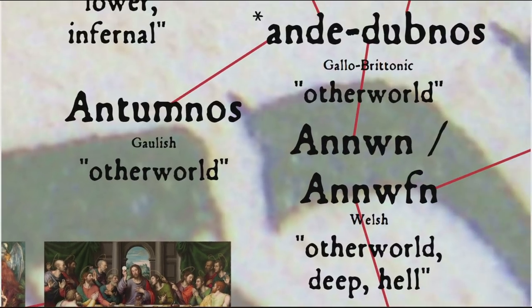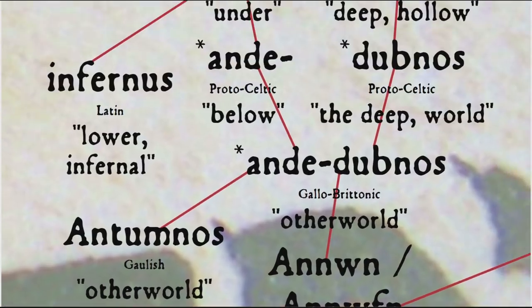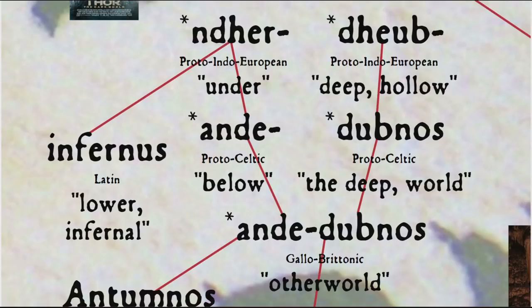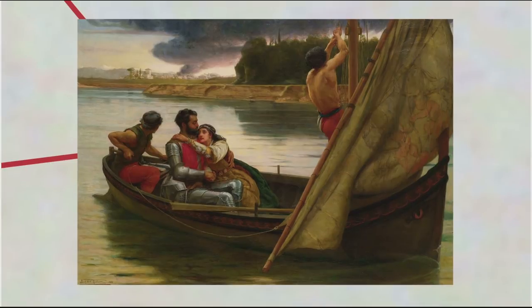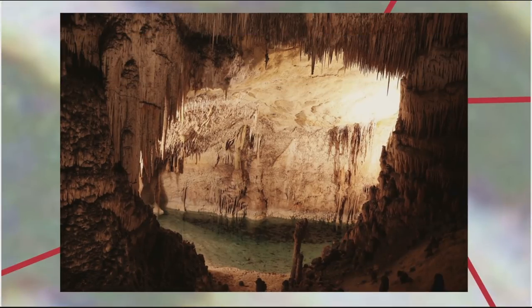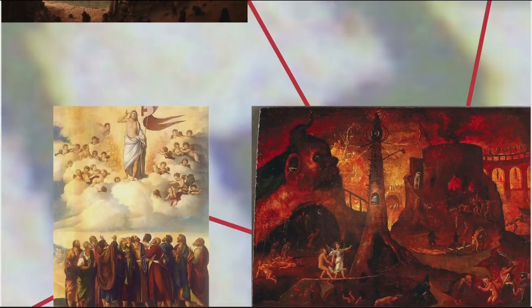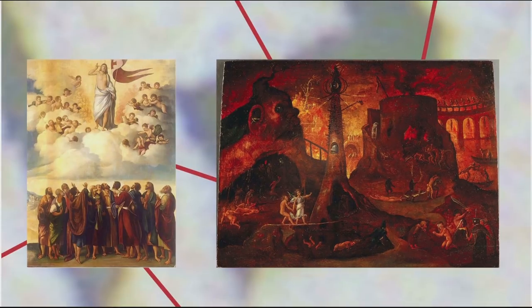Welsh Annwn or Annwfn, related to Gaulish Antumnos, comes from Gallo-Brittonic ande dubnos, 'underworld,' from Proto-Celtic ande, 'below,' from Proto-Indo-European *ndher, 'under' — also giving us 'under' through Old English and 'inferno' through Latin — and dubnos, 'the deep' or 'world,' from Proto-Indo-European *dheubh, 'deep, hollow,' also giving us words such as deep, dip, and dive. So not only does it refer to a kind of Celtic otherworld where deities live — note that the poem depicts it as an island with Arthur travelling there by boat, as in the usual depiction of Avalon — but also a kind of underworld of the dead. Later Annwn became conflated with both the Christian heaven and hell; in modern Welsh it means 'deep' or 'hell.'